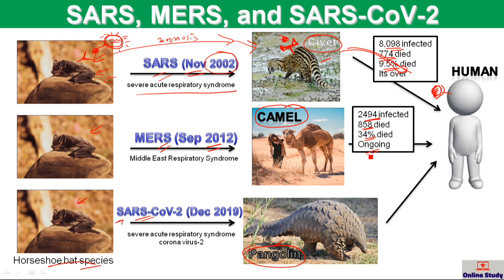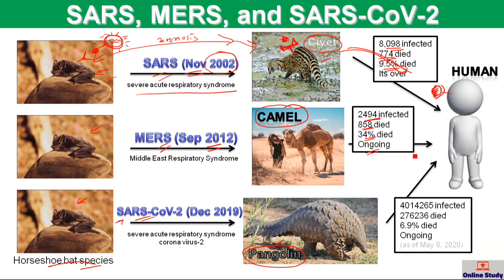People in the Middle East are still being infected with MERS. The latest one, SARS-CoV-2, has already infected more than 4 million people and 276,000 have died, giving a fatality rate of 6.9%. It is ongoing — every day people are being infected with SARS-CoV-2, also called COVID-19 because it was discovered in 2019.